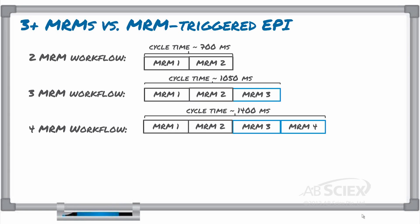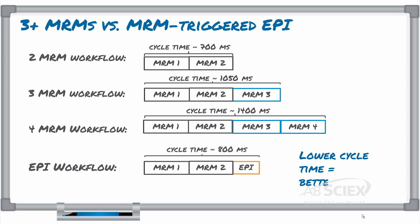So, simply adding one or two additional MRMs may have a negative impact on your data quality, which will have a negative impact on your quantitation. But, with the EPI workflow, you are able to measure all of the fragments for that detected peak for added confidence in identification, but without increasing cycle times and getting poor quality data. It's a great alternative to using added MRMs for confirmation.